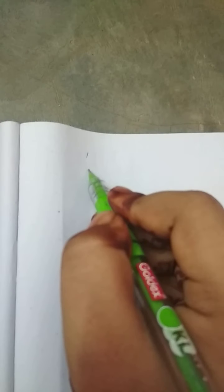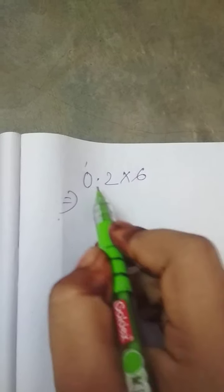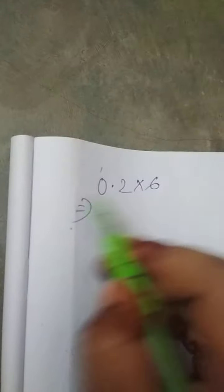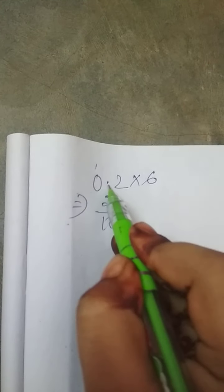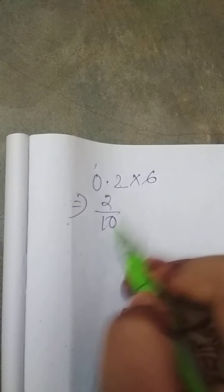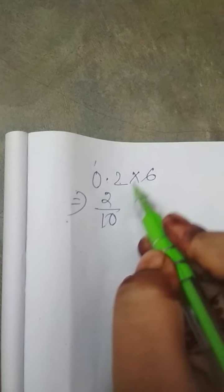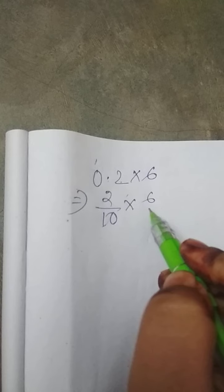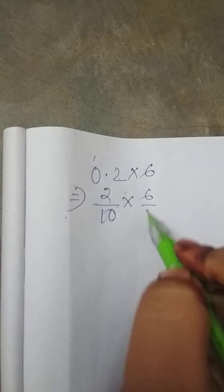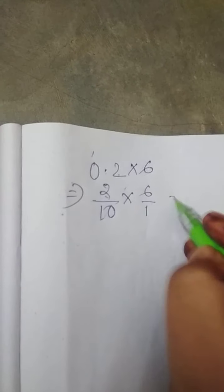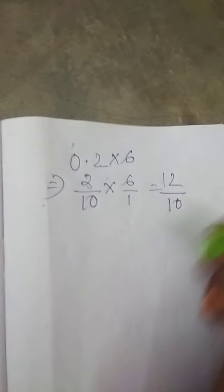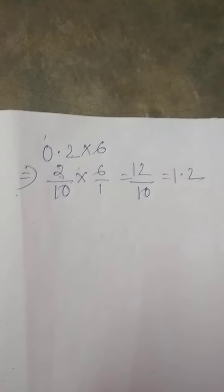Look at here — the question given: decimals multiplication. 0.2 into 6. First convert it into a fraction: 0.2 equals 2 by 10 — there is one digit after the decimal point, so we put one zero in the denominator. Then into 6, which is 6 by 1. Now multiply: 2 into 6 is 12, 10 into 1 is 10. That is 1.2. Understood?